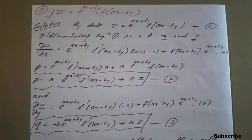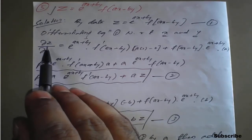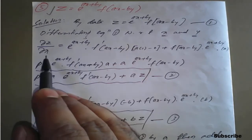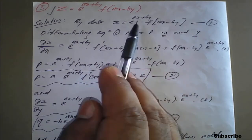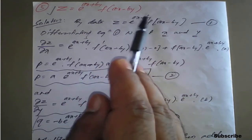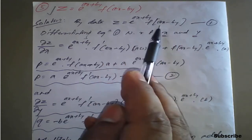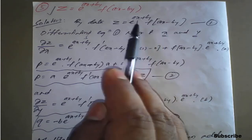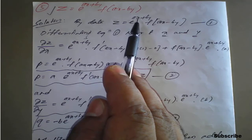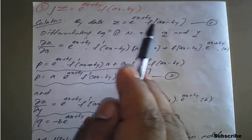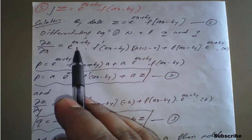Differentiate z with respect to x partially. So dou z by dou x equals — here e raised to (ax + by) is one function and f of (ax minus by) is another function. Since z is a product of two functions and both functions contain the variable x, we need to apply the product formula.